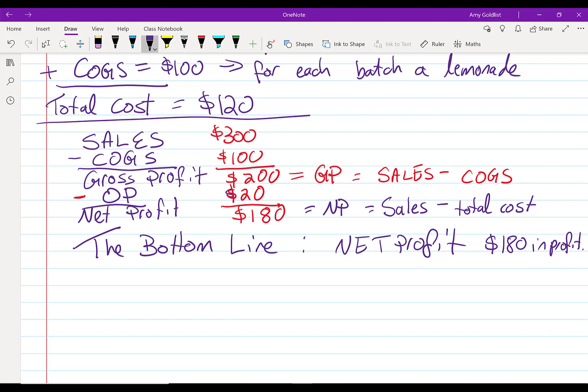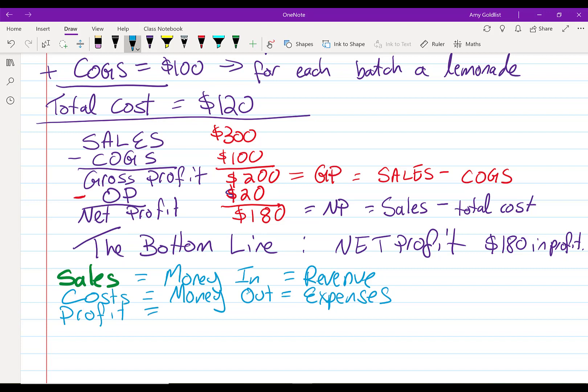Let's sum up just the different equations that we went over. We've got sales is money in is revenue. We have costs. That's money out, profit is expenses. We have profit. That is sales minus cost.